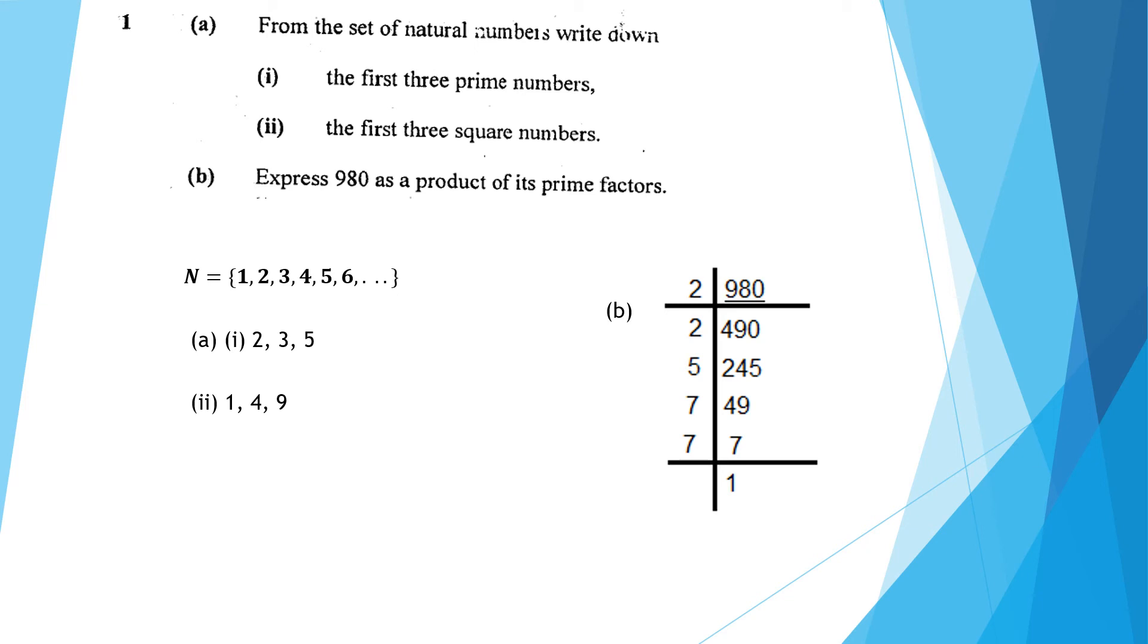245 is not exactly divisible by 2, so we try the next prime number, which is 5. 5 then divides 245 to give 49.